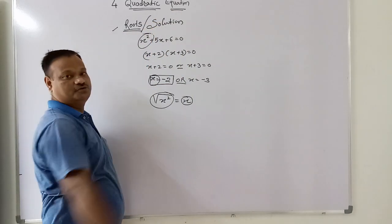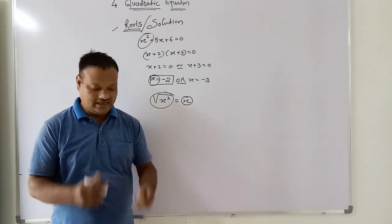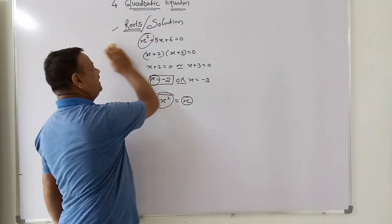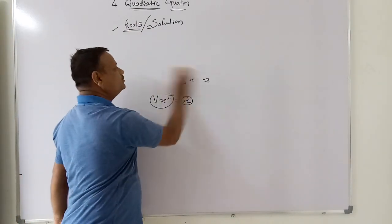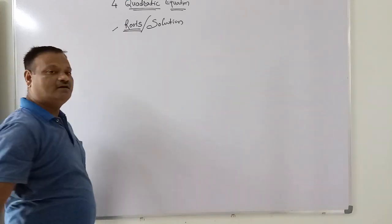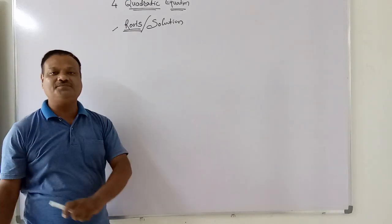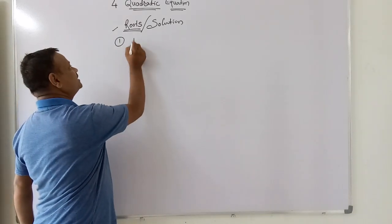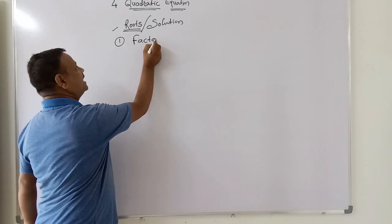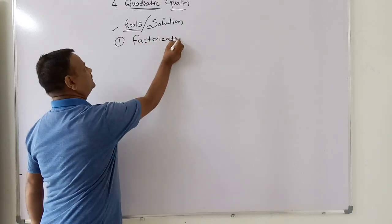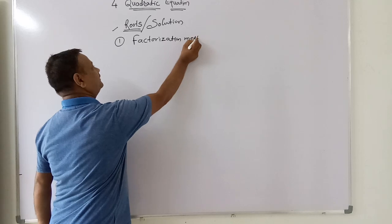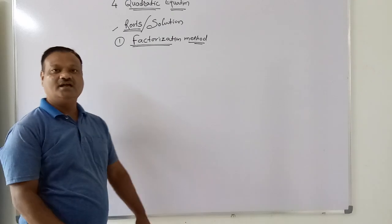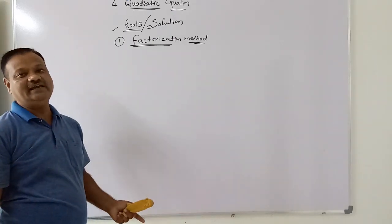Either roots or solution — we can say solution. Now, the roots of this equation can be found by using the factorization method. The first method is the factorization method. By using the factorization method, we can find the roots of the quadratic equation.